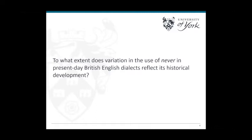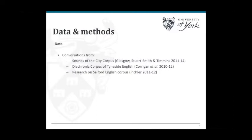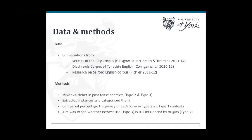Regarding data and methods: conversations were drawn from three different archives — from Glasgow, Tyneside and Salford. I extracted instances of 'never' and 'didn't,' which can mean the same thing and are equivalent forms in this environment. I categorized them into the different kinds, then compared the percentage frequency of each form in the type two versus the type three context, with the aim of seeing whether the newest non-standard kind is still influenced by its origins in type two.